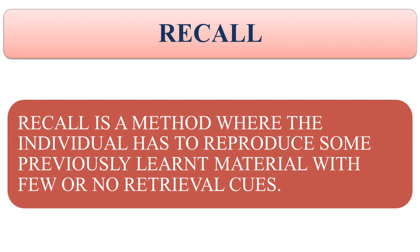The second type is serial recall, where material is recalled in the exact order in which it was presented. For example, if you watched a dance show and were asked who performed first, who was second, and so on, your answers would be in serial order. Similarly, when solving a mathematical problem step by step — like 2 plus 2 equals 4, and 4 into 4 equals 16 — you are doing each step one after the other, which is serial recall.